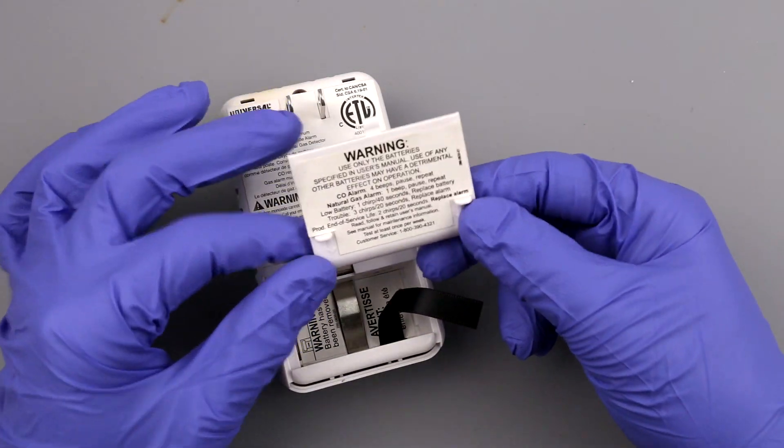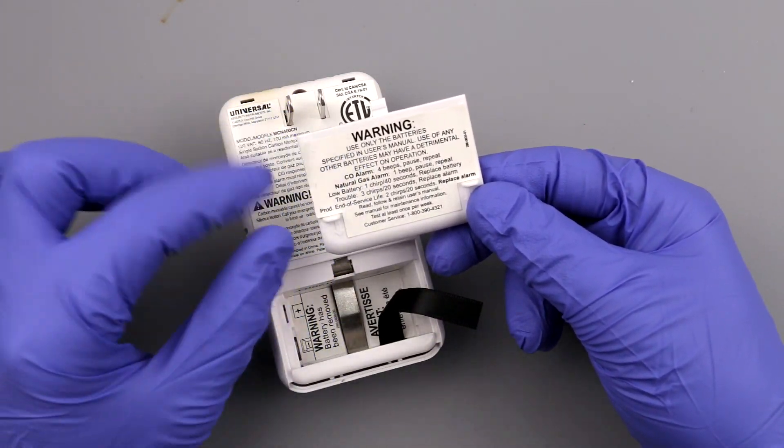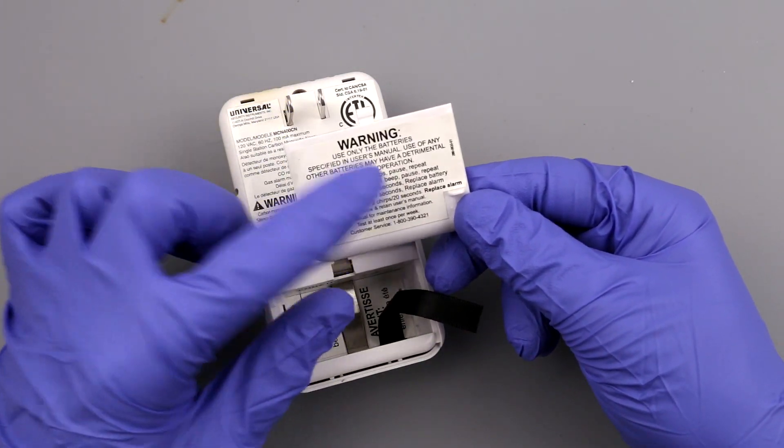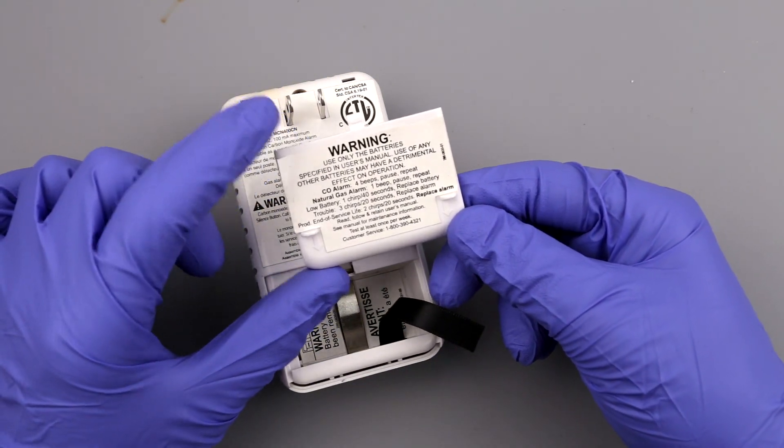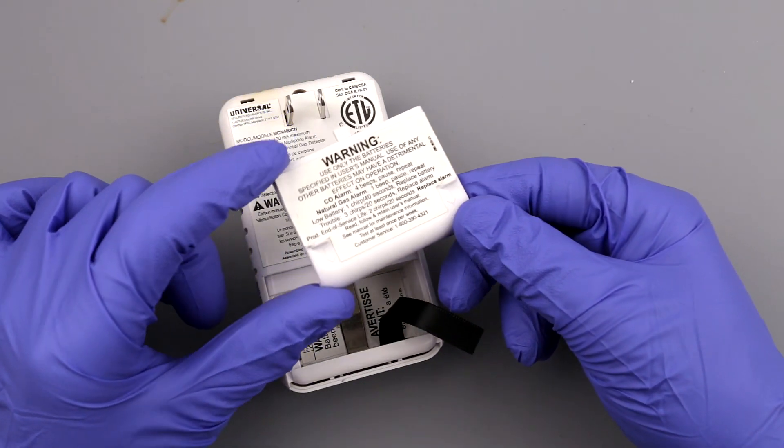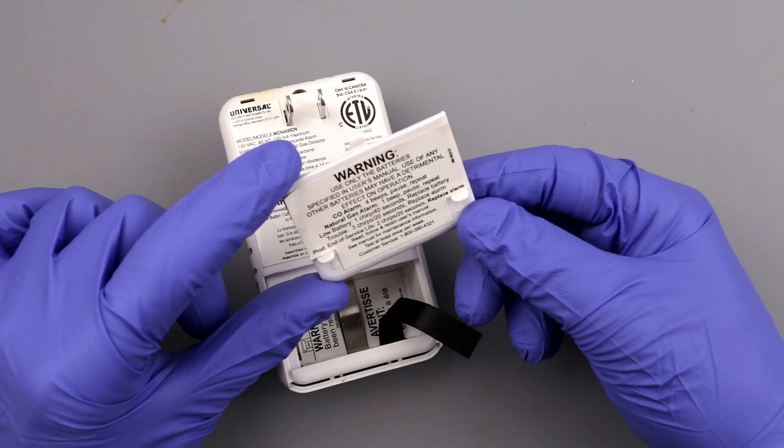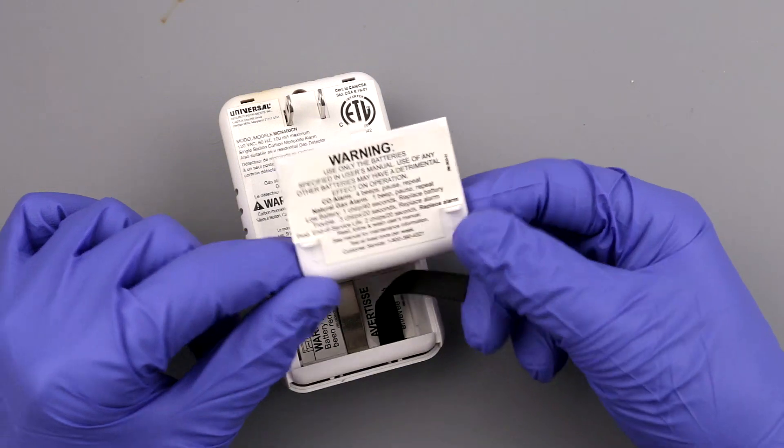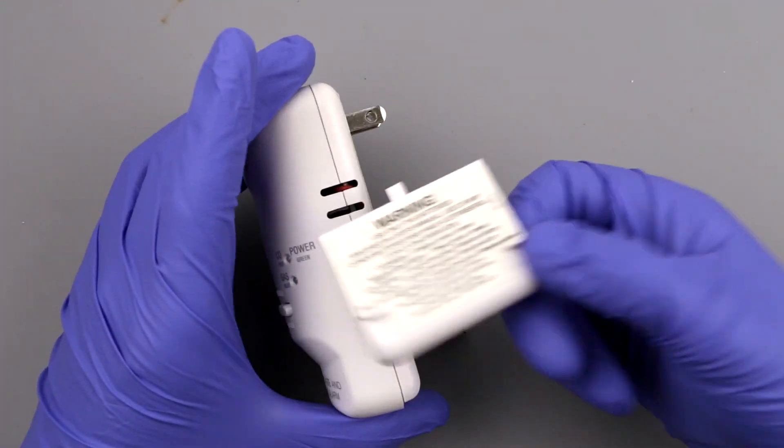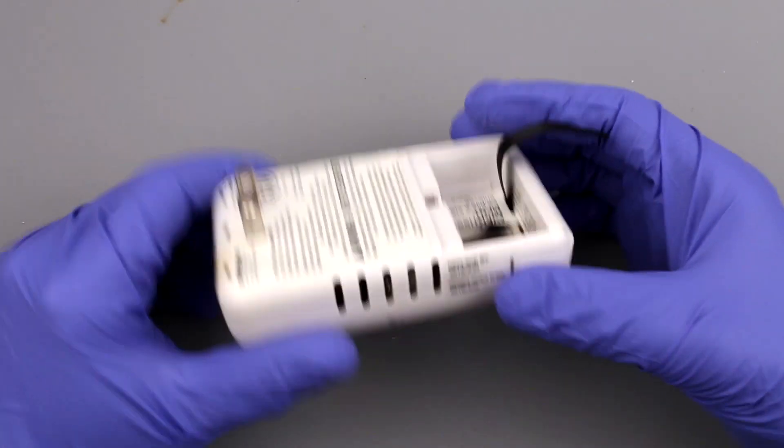And that's pretty much it. It has all sorts of manuals over here - CO alarm four beeps pause repeat, natural gas alarm one beep pause repeat, low battery one chirp 40 seconds, trouble three chirps 20 seconds, and end of service life two chirps 20 seconds. Very simple instructions, so essentially I have to replace this dude.